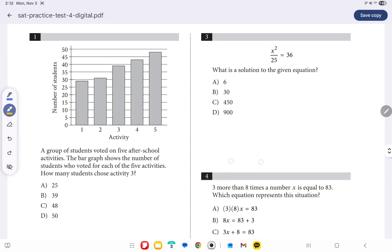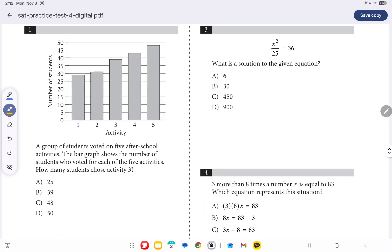Let's look at question number one. Question number one says a group of students voted on five after-school activities. The bar graph shows the number of students who voted for each of the five activities. How many students chose activity number three? So we start off by highlighting what are we asked to do, and that is to find the number of students who chose activity number three.